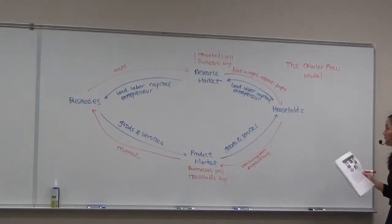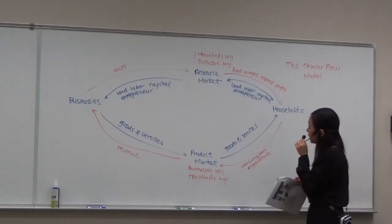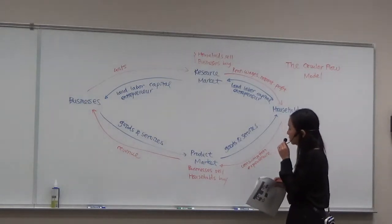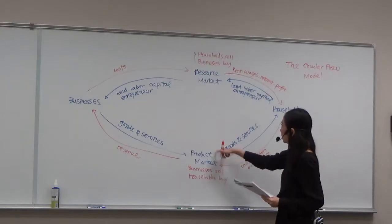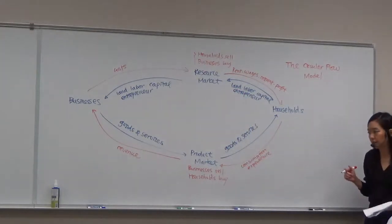This simple model shows you how the market works. We have two major markets: the product market and the resource market. Let's first take a look at the product market.